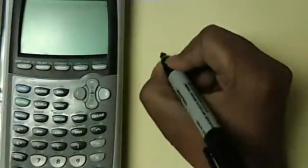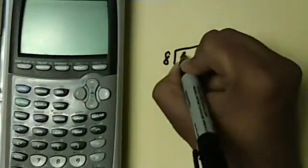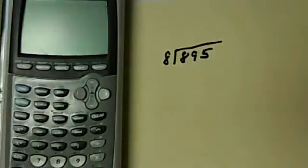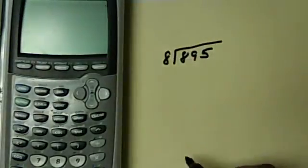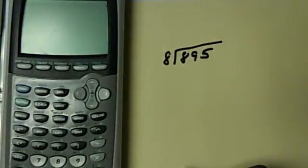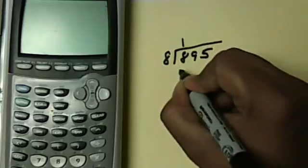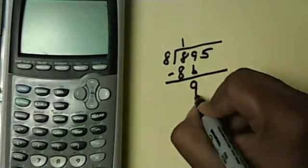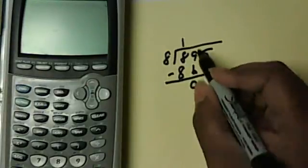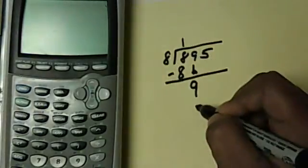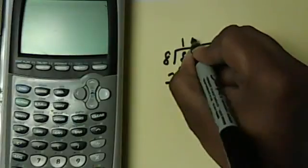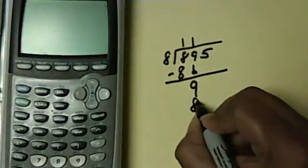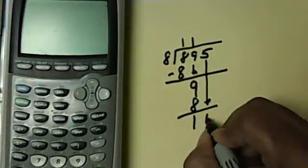For example, if I had something like 895 and I wanted to do regular division, I would say what times 8 gets me closest to the first number, as long as it's equal to or higher. So that's 1 times 8, which gives me 8, and I need to subtract. Then, since that's 0, I bring down my next number. If this number is higher, I go what times that number gets me closest to 9. Of course, that's 1 times 8, which gives me 8, and then I need to bring down my 5.